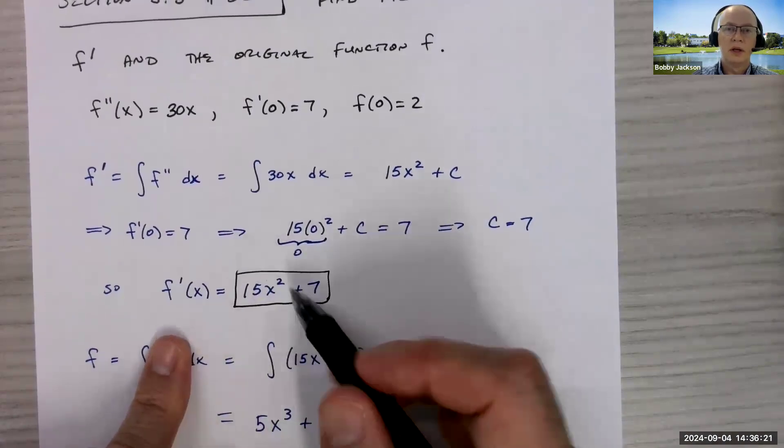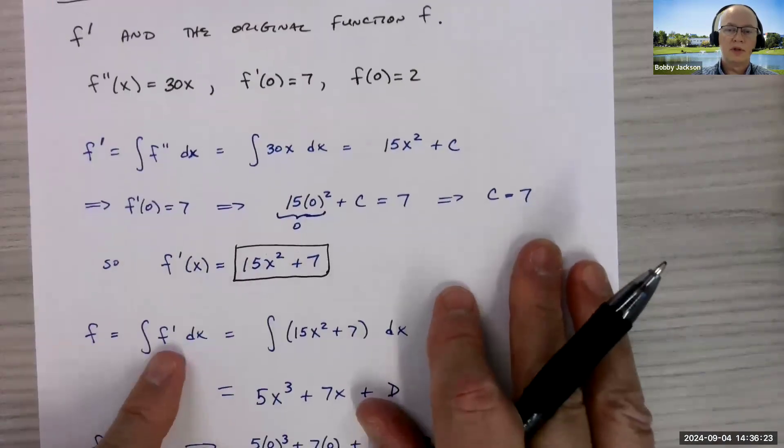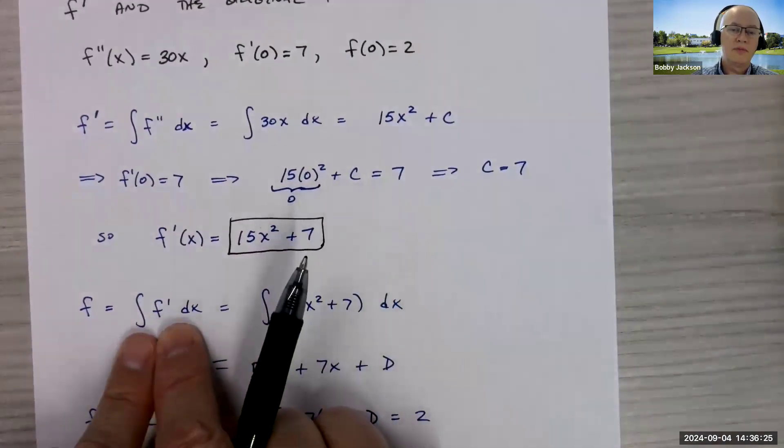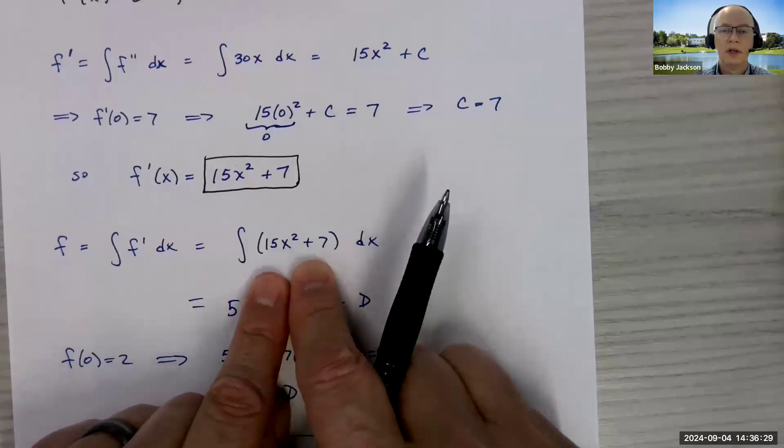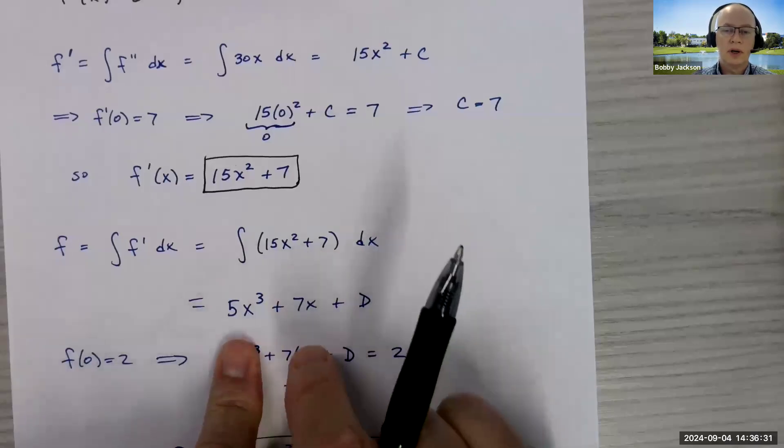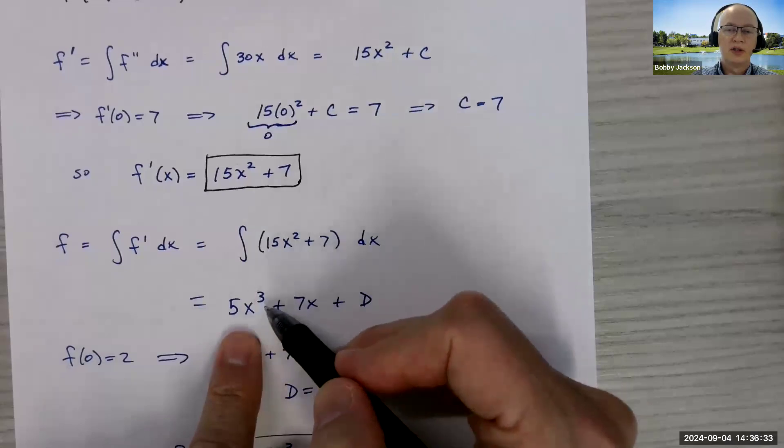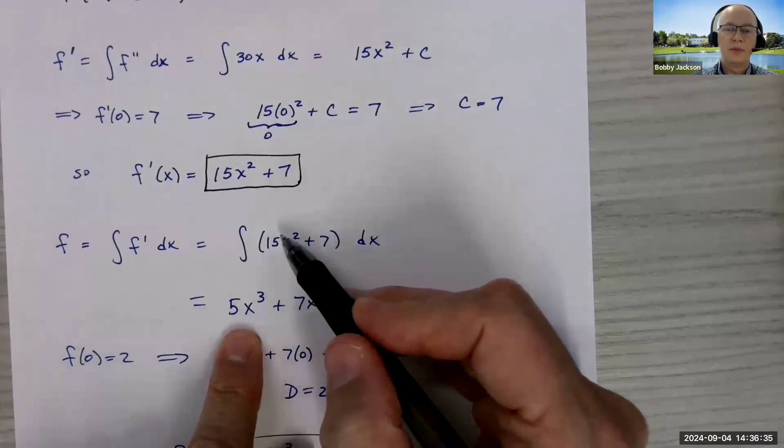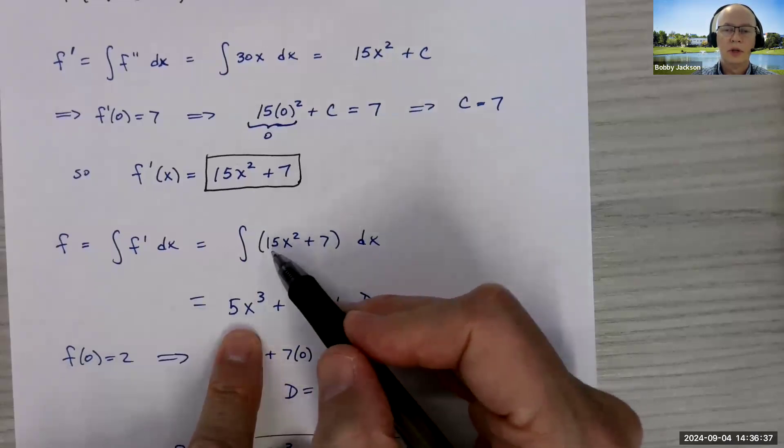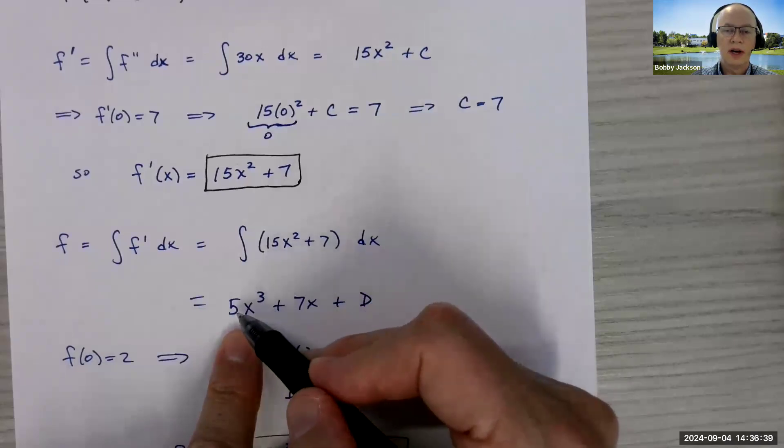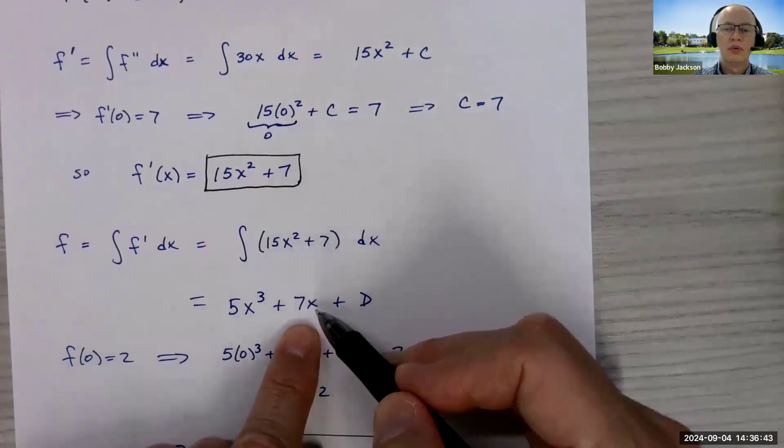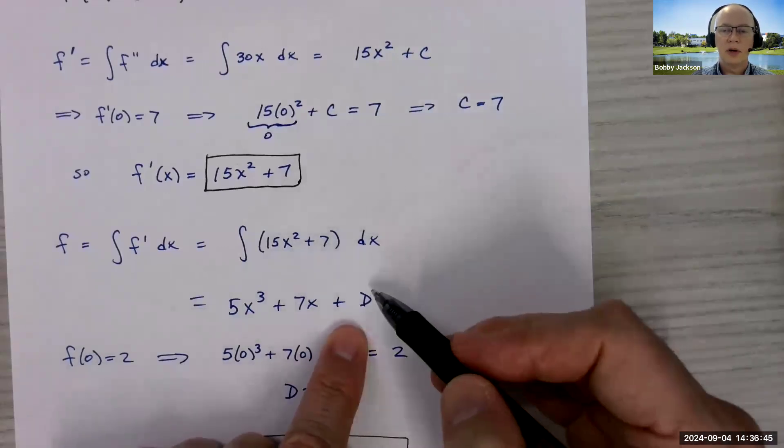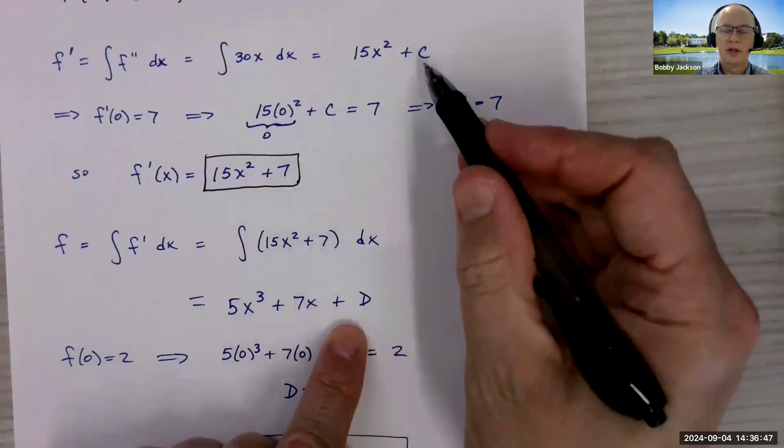That's the first question, first blank, finding f prime. Now we can find the original function by integrating f prime. So I'm now gonna integrate this function, 15x squared plus seven. The antiderivative of 15x squared is just five x cubed. So it's 15 times one third x cubed, but one third times 15 is five. Antiderivative of seven is seven x, plus our arbitrary constant. Calling this constant D just to differentiate it from the constant C up here.